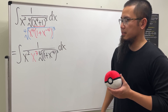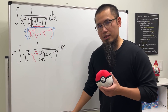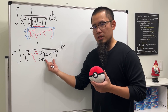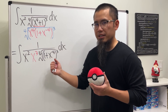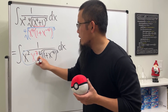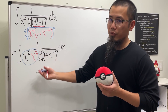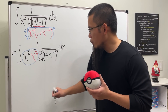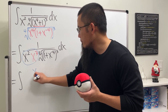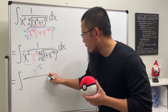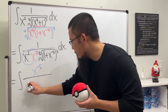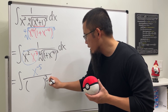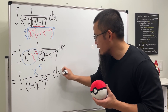Now we have one plus x to the negative four inside. If we differentiate that, the function part is x to the negative five. Do we have x to the negative five? We do — it's x squared times x to the third power, which is x to the fifth, and we can move that up to make it a negative exponent. So we rewrite this as the integral of x to the negative five over the quantity one plus x to the negative four, raised to the three-fourths power, times dx.